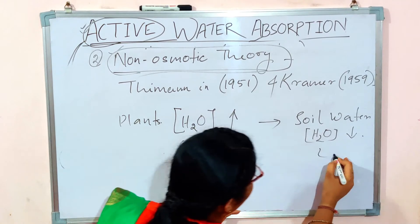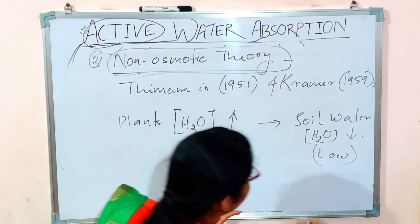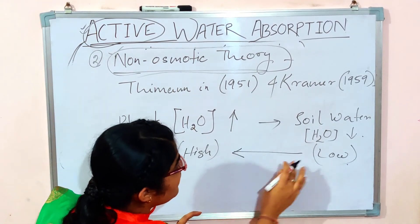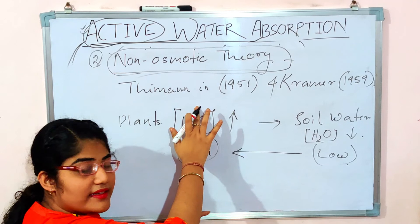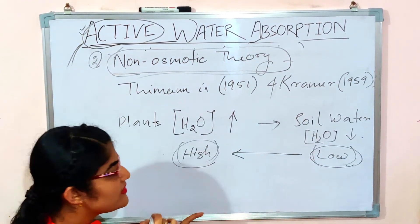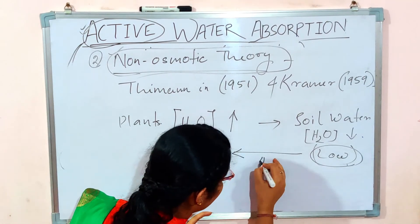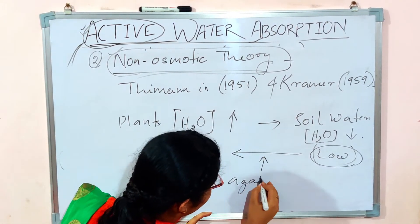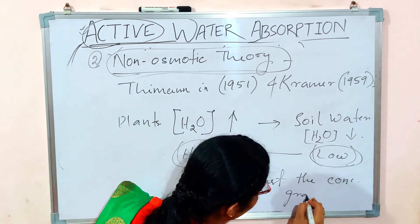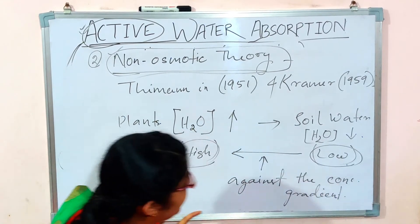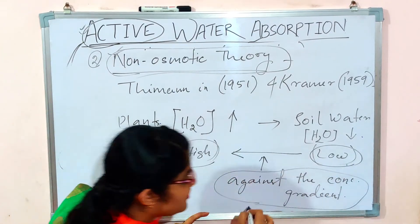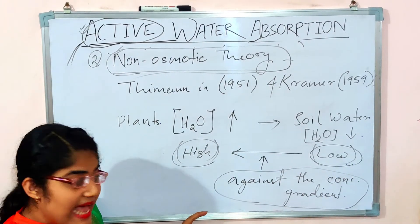As we know, in the absorption process, water moves from the soil toward the plant. But in this case, how can water move from a low concentration toward a higher concentration — that is, against the concentration gradient? The non-osmotic theory mainly involves water movement against the concentration gradient.